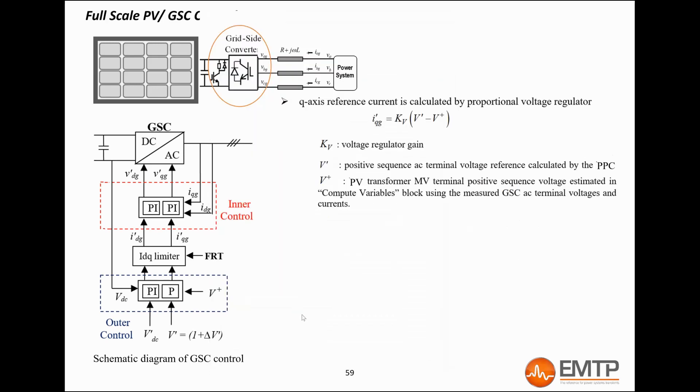The Q-axis loop now controls the Q-axis voltage in order to follow the voltage reference sent by the PPC for the park reactive power control. The outer loop produces a Q-axis current reference, which is also limited by the limiter and sent to the inner loop, which commands the Q voltage.